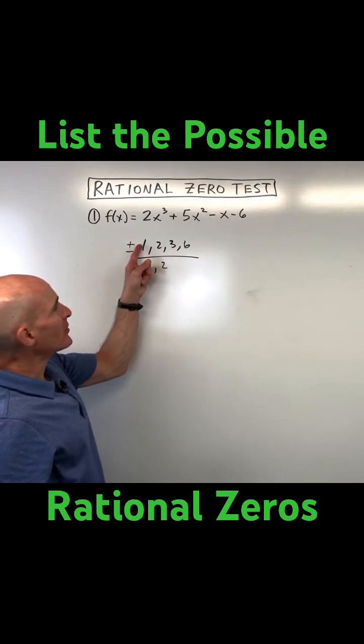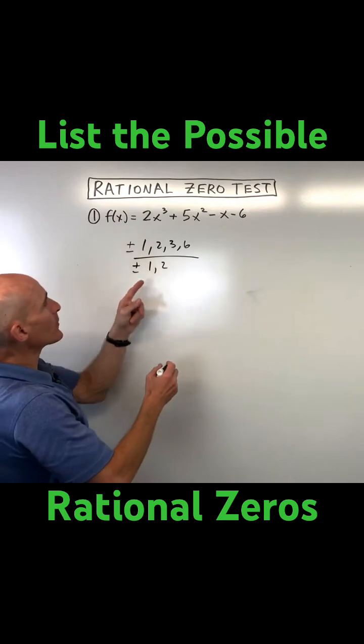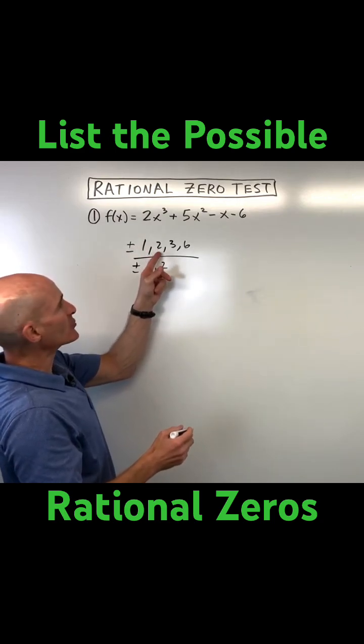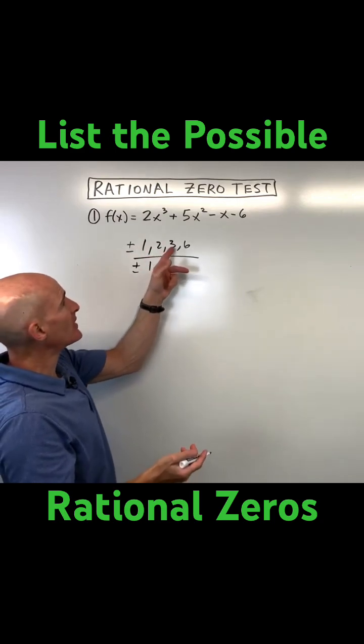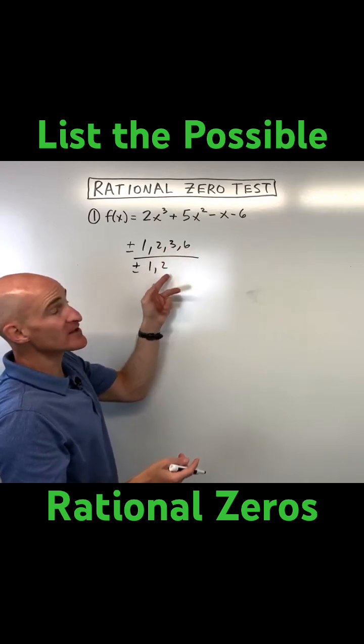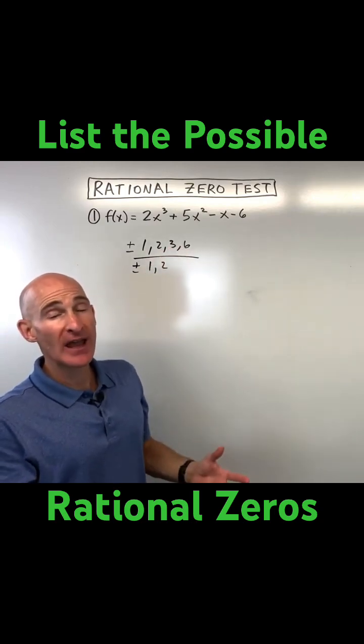So you take any numerator with any denominator. For example, it could be 1 over 1, or 1 over 2, which is a half, or 2 over 2, which is 1. We listed that already. 3 over 1, 3 halves, 6 over 1, 6 over 2, positive or negative.